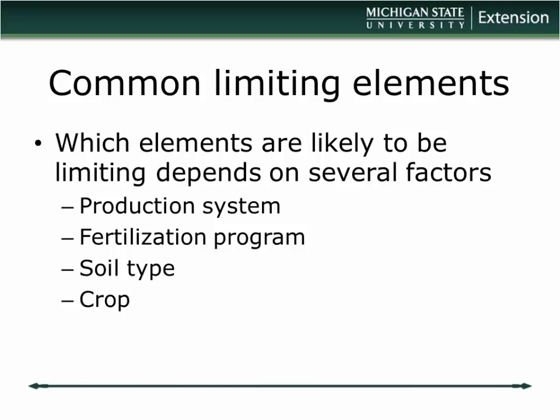There are also certain crops that tend to have particular nutrient problems — classic examples would be manganese deficiency in red maple, iron chlorosis in pin oak, and a unique condition called mouse ear in river birch, which turns out to be a nickel deficiency. So certain plants are prone to these problems and we have to keep an eye out.